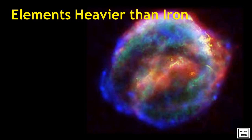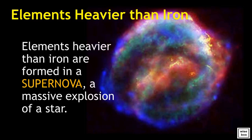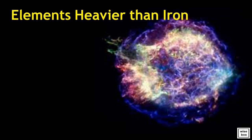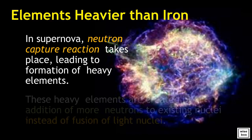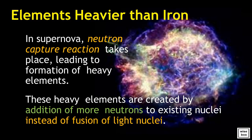All the elements heavier than iron are formed in a supernova, a massive explosion of a star. In supernova, neutron capture reaction takes place, leading to formation of heavy elements. These heavy elements are created by addition of more neutrons to existing nuclei, instead of fusion of light nuclei.